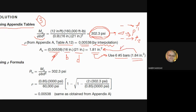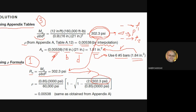Now the direct method (Method 1): we calculate RN = MU / (φ × B × D²) as before, apply it in the ρ formula, and find ρ = 5.38 per thousand. This is the same result as the table method.